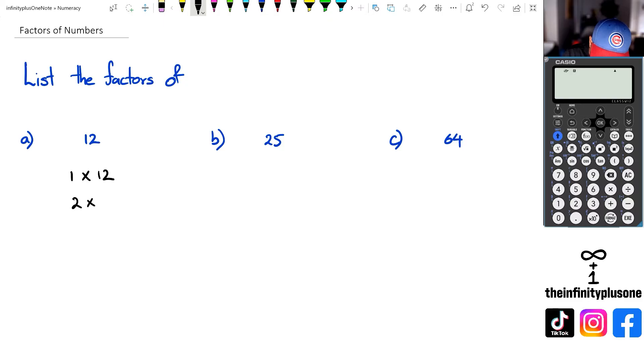and then we've got 2 times 6, and then we have 3 times 4. Now, one surefire way of doing this is to always start with 1 and then go with 2, 3, and so on, right?